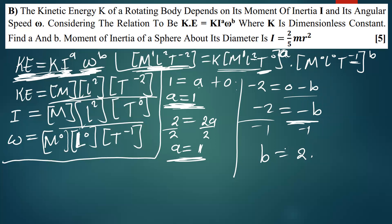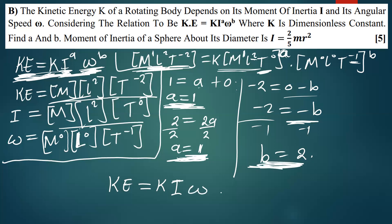The question asked us to find a and b, so a equals 1 and b equals 2. We can write the final solution as: the kinetic energy of a rotating body equals k times I raised to the power one times omega squared. This is how you use dimensional analysis to derive the formula.